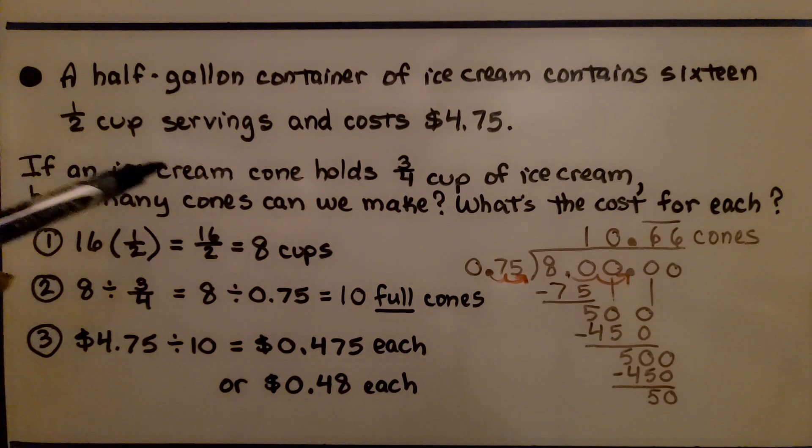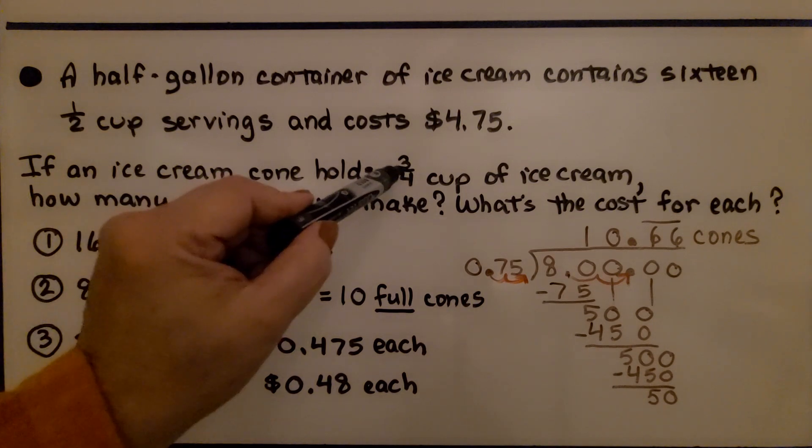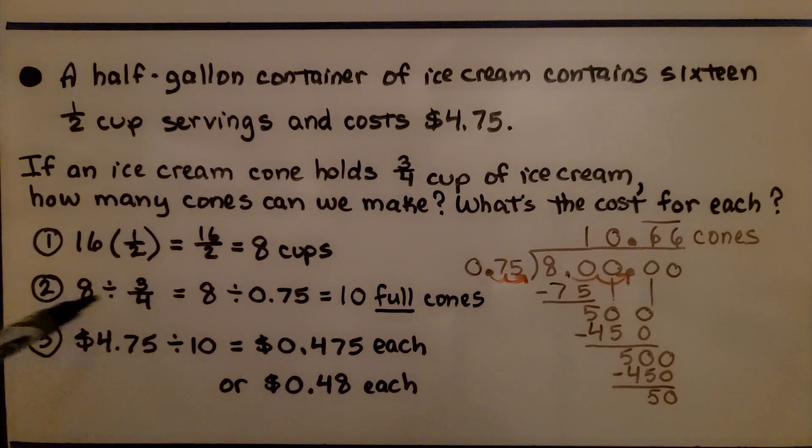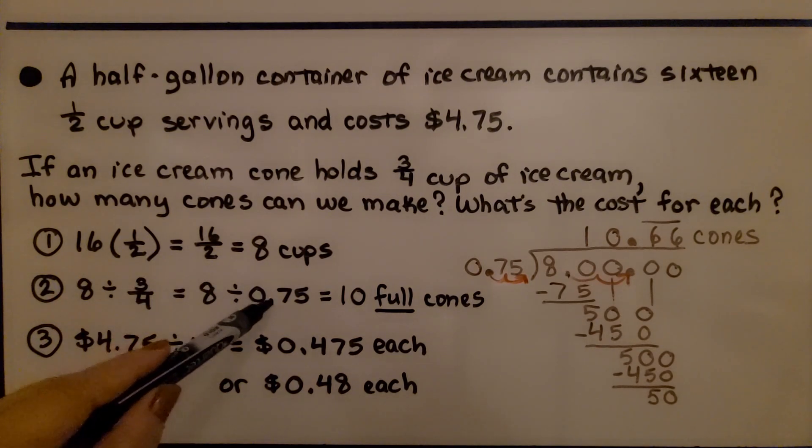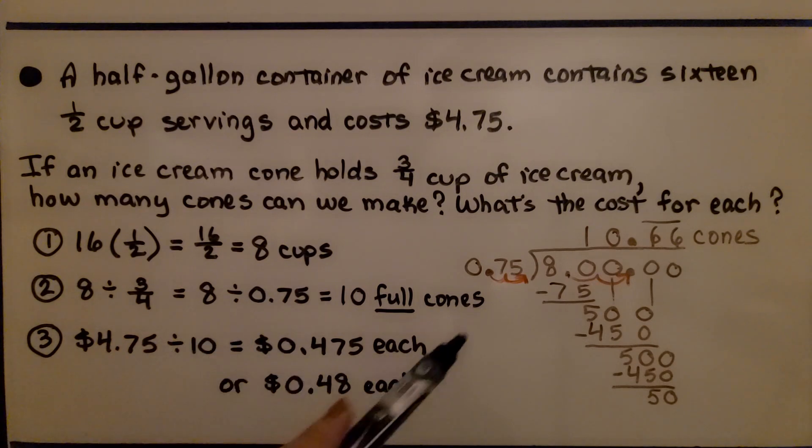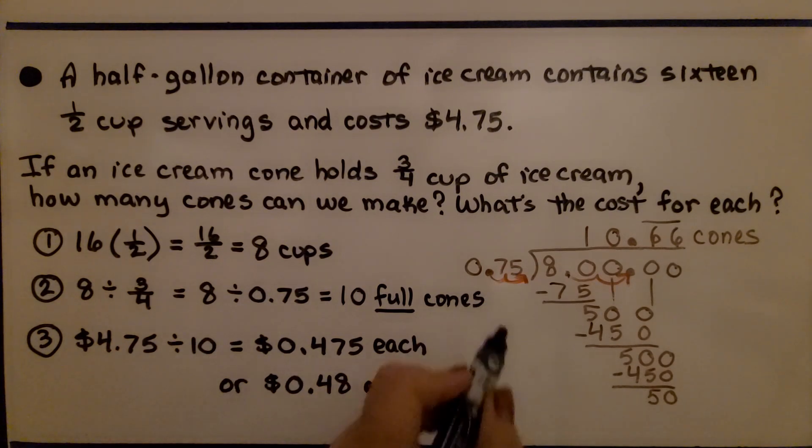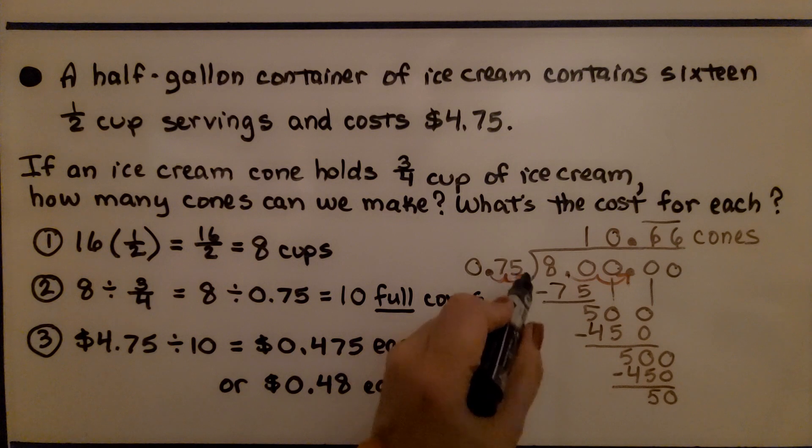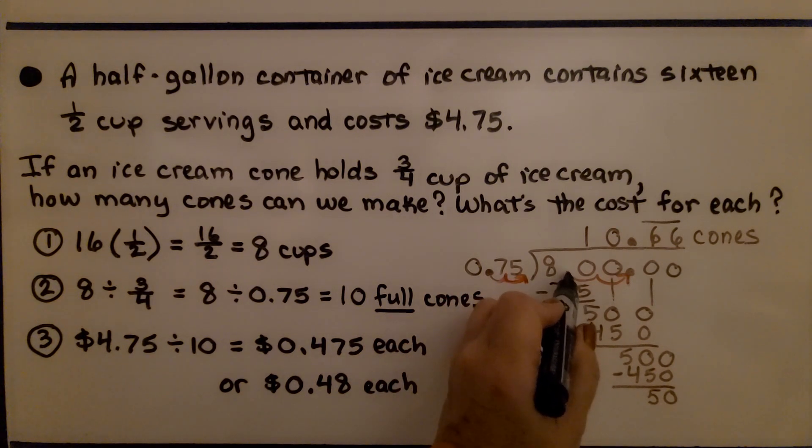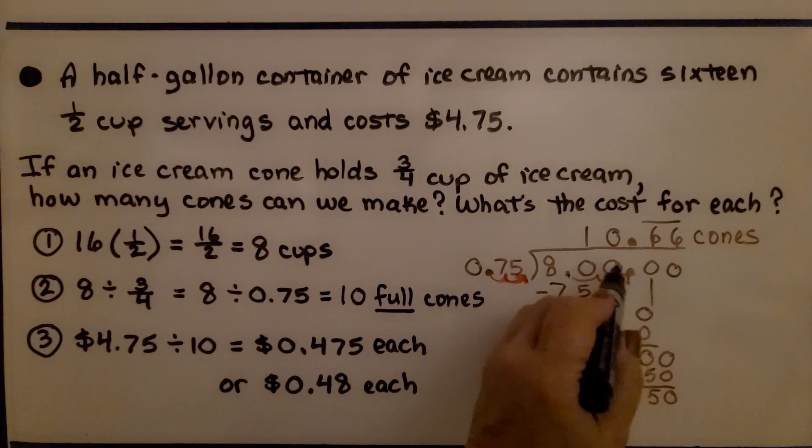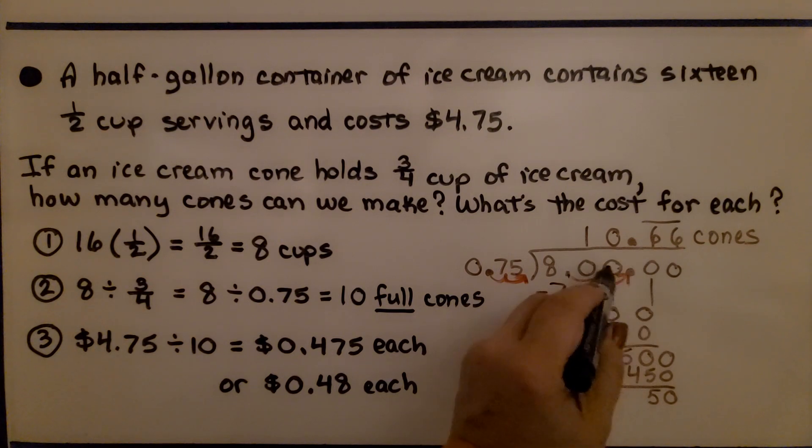We know that a cone can hold 3/4 cup of ice cream. So now we're going to take the 8 cups and divide it by 3/4. We can change the 3/4 to 0.75 and do the long division. We have a decimal point, so we're going to move it over 2 times. That means the decimal point after the 8 needs to be moved over and we need some zeros as placeholders.